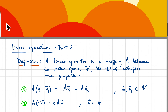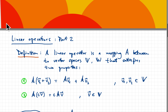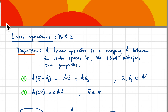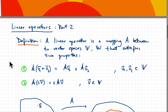Here's our definition. A linear operator is a mapping — we call it A — between two vector spaces V and W. You take this operator, apply it to a vector in V, and get a vector in W. For that to be a linear operator, it needs to satisfy two properties. The first is that if you apply your operator to a sum of two vectors in V, the result is the same as applying the operator to each vector separately and then adding.